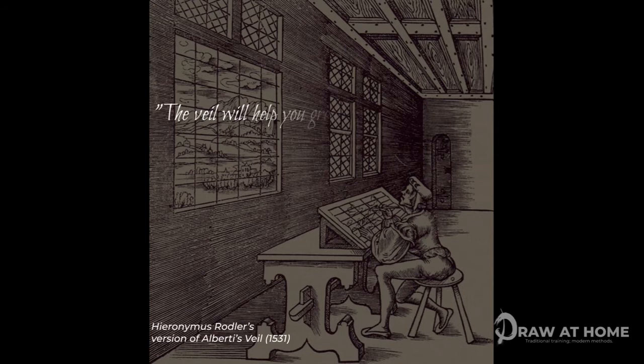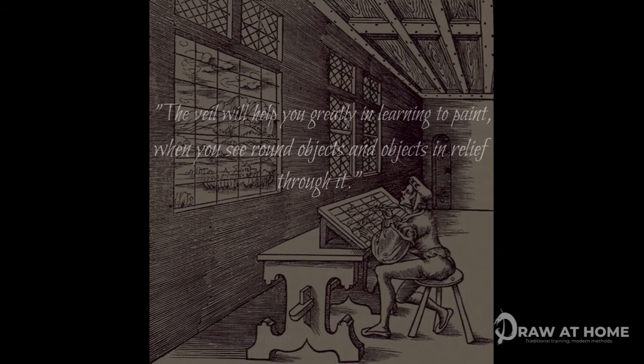He goes on to say the veil will help you greatly in learning to paint when you see round objects and objects in relief through it. Here we have a clear relation to the fact that by using a grid system the artist can reduce the subject matter from the three-dimensional down onto the two-dimensional surface, allowing them to accurately recreate what they are seeing. He also gives advice for the artist to develop their abilities by only indicating the edges — the top, bottom, left and right, or the envelope of the form. Most notably, he also says the artist could remove the physical veil completely and begin to use just their eyes to find the relative perpendicular — or in other words, where the height meets the width.